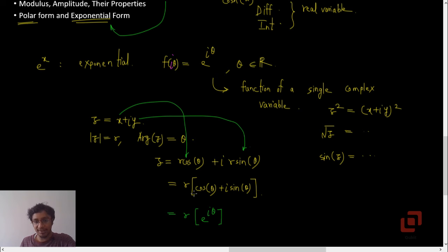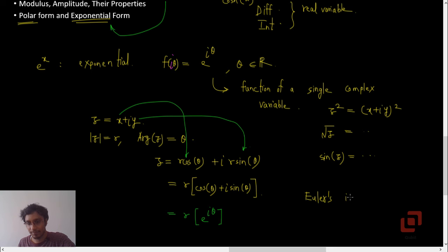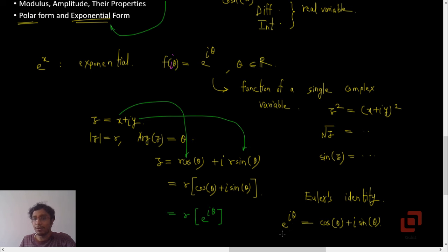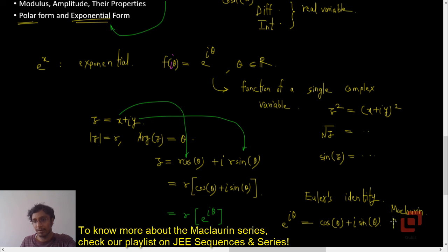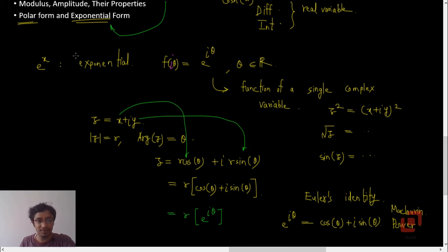The expression cos theta plus i sin theta is actually equal to e to the power i theta, and this is known as Euler's identity: e to the power i theta equals cos theta plus i sin theta. You can prove this using the Maclaurin series, which is a power series in theta. So the exponential form of the complex number is z equals r e to the power i theta.